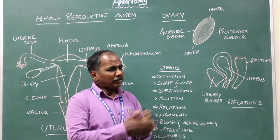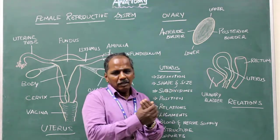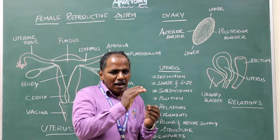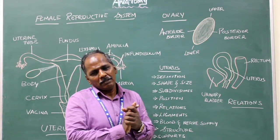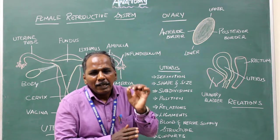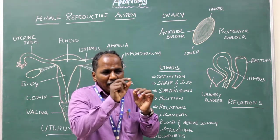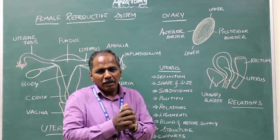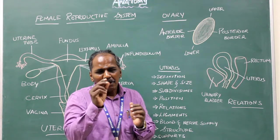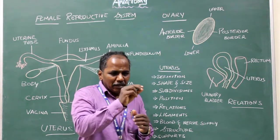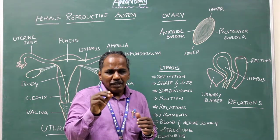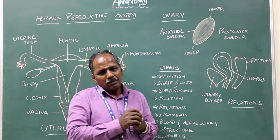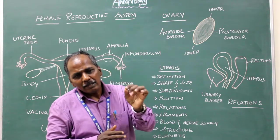Structure: if you cut the ovary, you have an outer cortex and an inner medulla. The cortex contains various stages of development of the ova — the egg. You can see the development of the egg in various stages in the cortex.